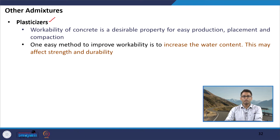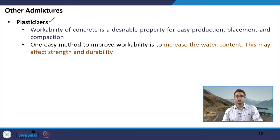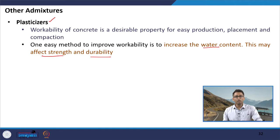One of the easiest methods to improve workability is to increase the water content in the mixture, because more water means more lubrication, making the mix easier to work with. However, increasing water content also increases the water-cement ratio — an important parameter controlling strength and other characteristics — and may strongly affect the strength and durability of the concrete mixture. Therefore, this is not a good method to improve workability.